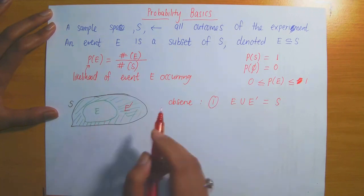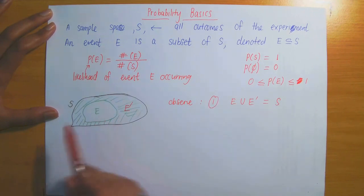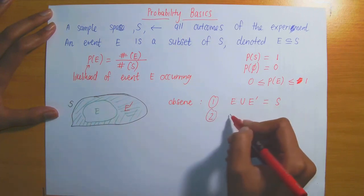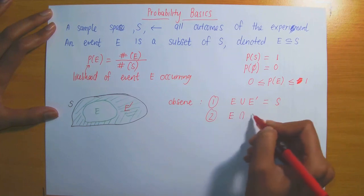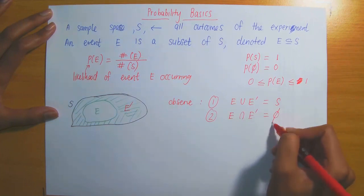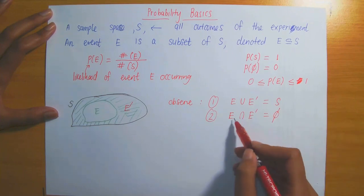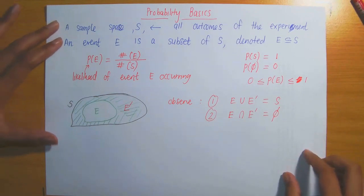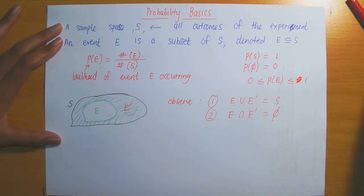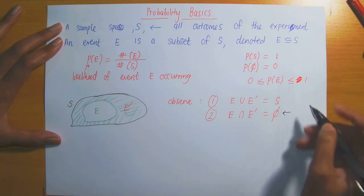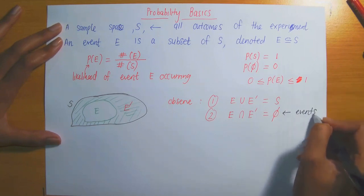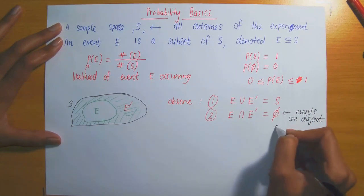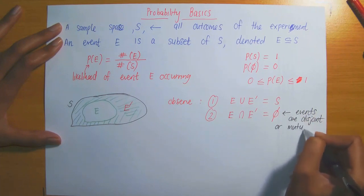More importantly, observe that E and E complement do not intersect each other — there is no overlap based on how E prime is defined. So E intersection E prime equals the empty set, since there is no overlap. When two events have an empty intersection, we say they are disjoint or mutually exclusive.